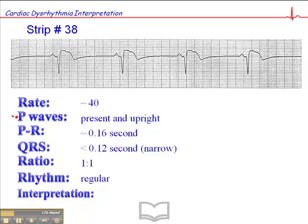We have P-waves, we have narrow QRS, we have a 1 to 1 ratio. The only thing abnormal here is this heart rate of 40. So basically what we have is a sinus bradycardia with a heart rate of 40.